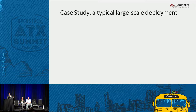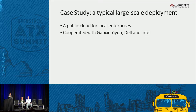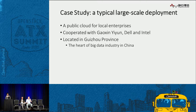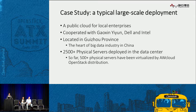Here is an example of a typical large-scale deployment for us — a public cloud for a local enterprise in China. We cooperated with Dell and Intel for this deployment. The data center is located in Guizhou Province in China, which is the heart of the big data industry. We have more than 2,500 physical servers deployed in the data center, and so far 500 physical servers have been virtualized by our OpenStack distribution.